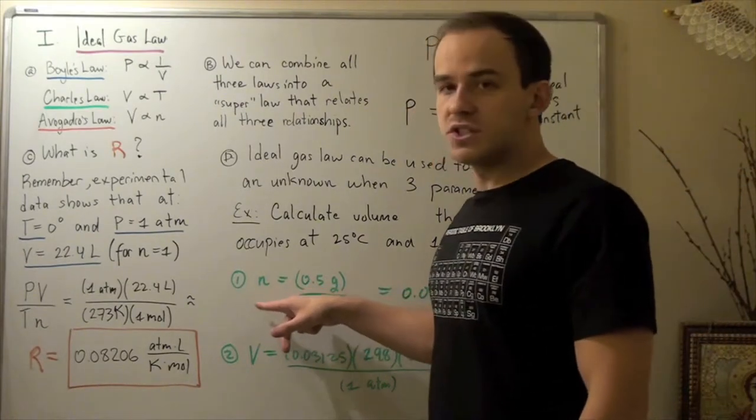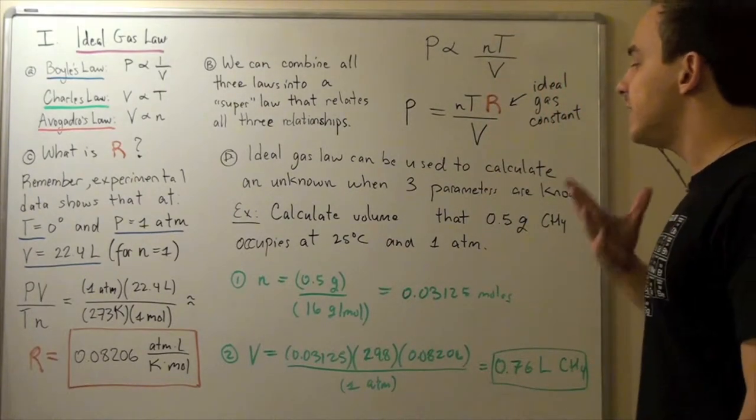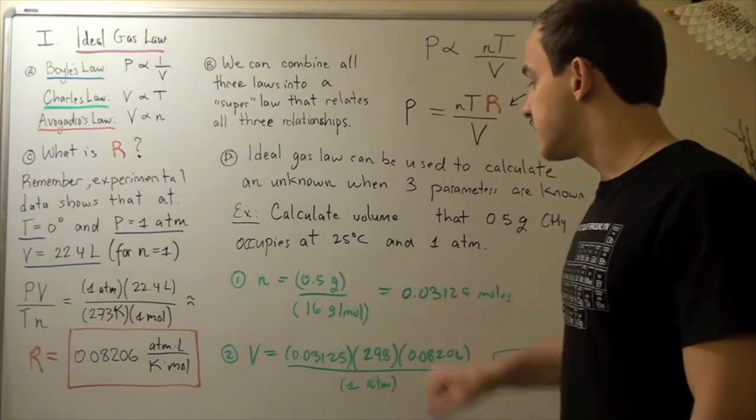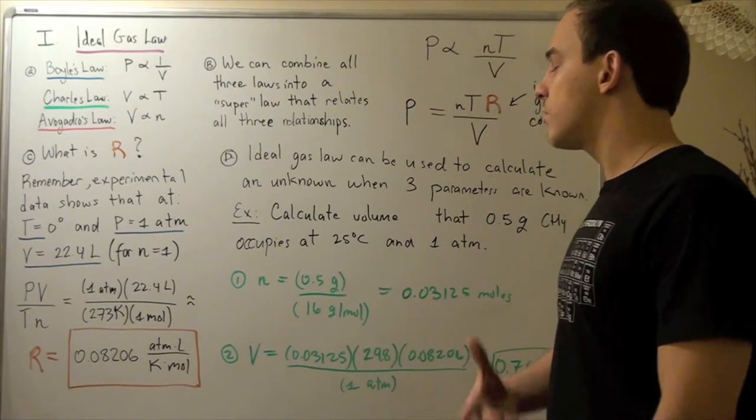To find the number of moles n, we simply take our number, 0.5 grams of methane, divide that by our molecular weight of methane, grams cancel, and we get moles on top. So 0.5 grams divided by 16 is 1 over 32, which is 0.03125 moles.